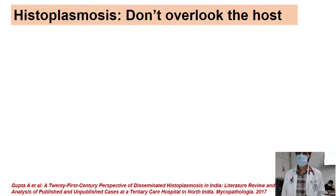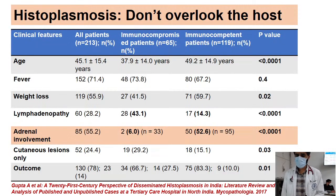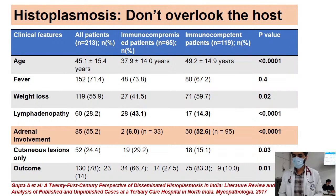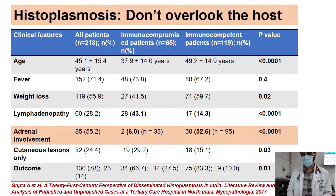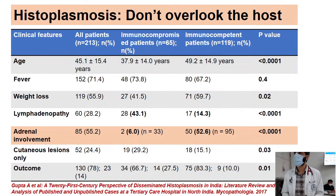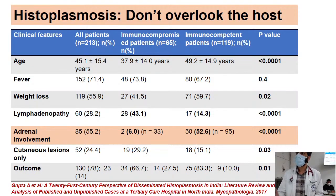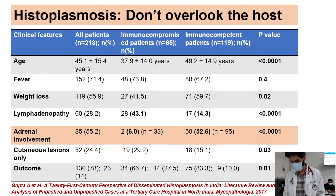A literature review from the same institute by Gupta et al. examined how host immune status influences histoplasmosis presentation. Comparing immunocompetent and immunocompromised patients: adrenal involvement was more common in immunocompetent patients, while lymphadenopathy and cutaneous lesions favored the immunocompromised group. Outcomes were slightly worse in the immunocompromised group, as expected.